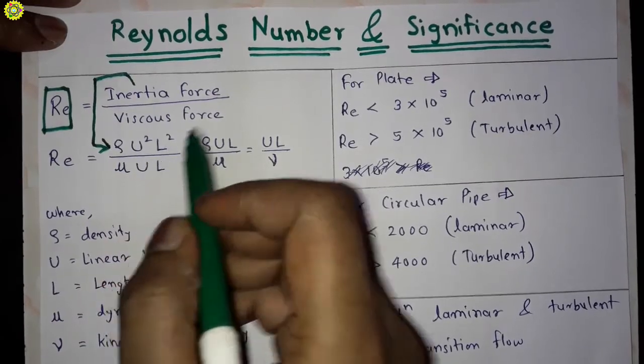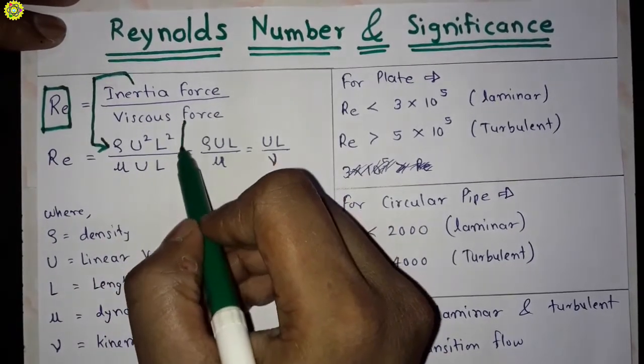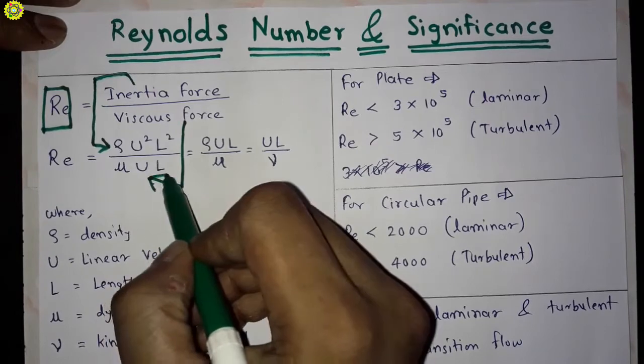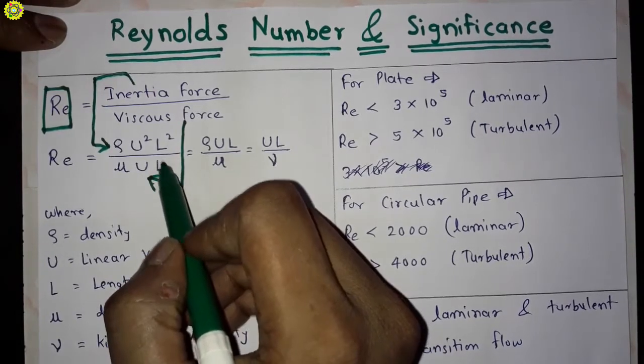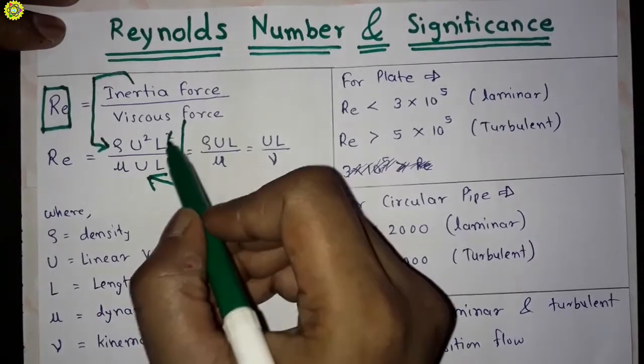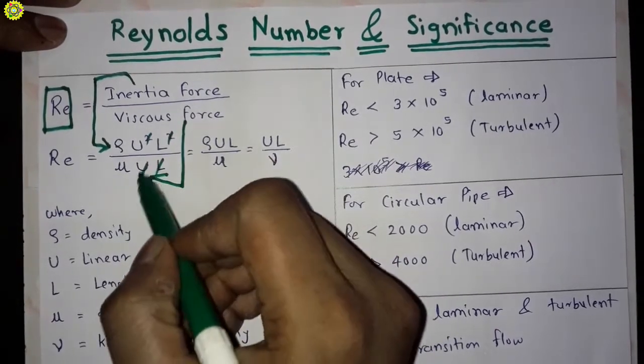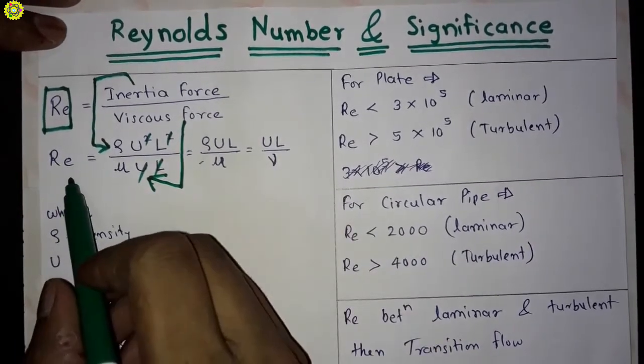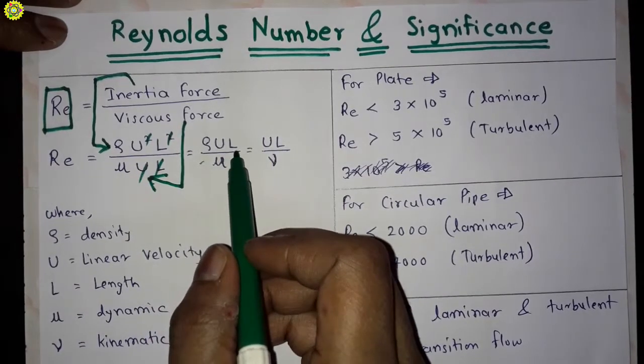And this viscous force is given by the formula mu u l. After simplifying this, this will cancel out and we will get Re is equal to rho u l upon mu.